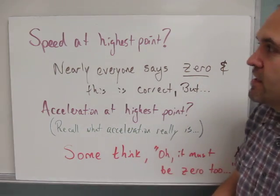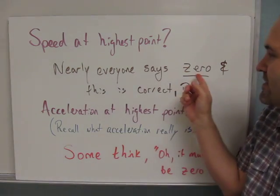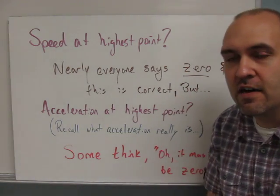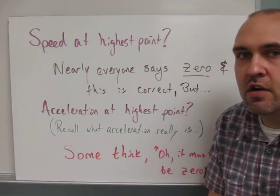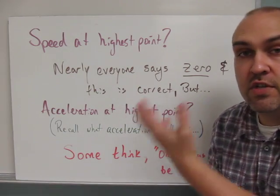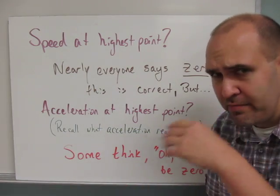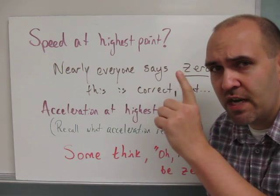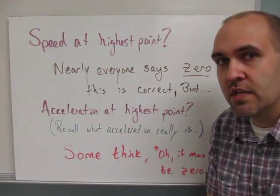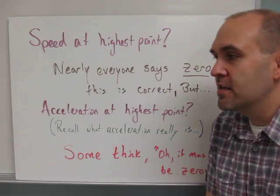Not many people have trouble with the speed. Nearly everyone says zero, and that's correct. When the ball reaches its highest point, the gravitational field has slowed the ball down, decreased its speed, and so at the very tip-top of its path, it's not moving for a moment. Its speed is zero.